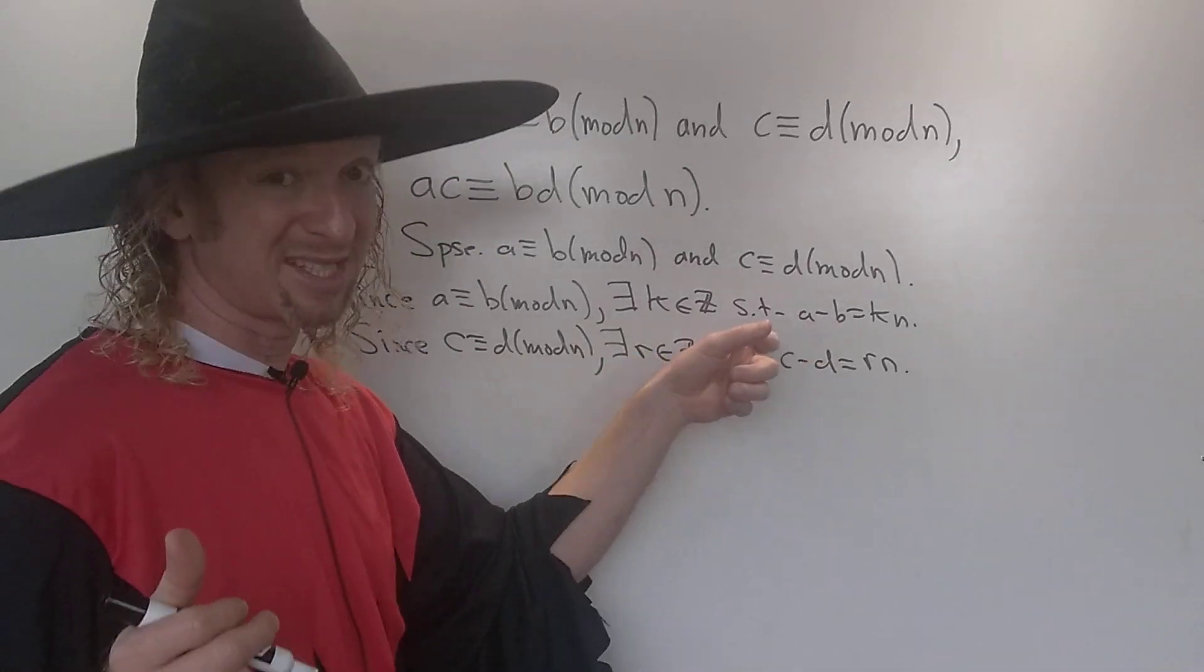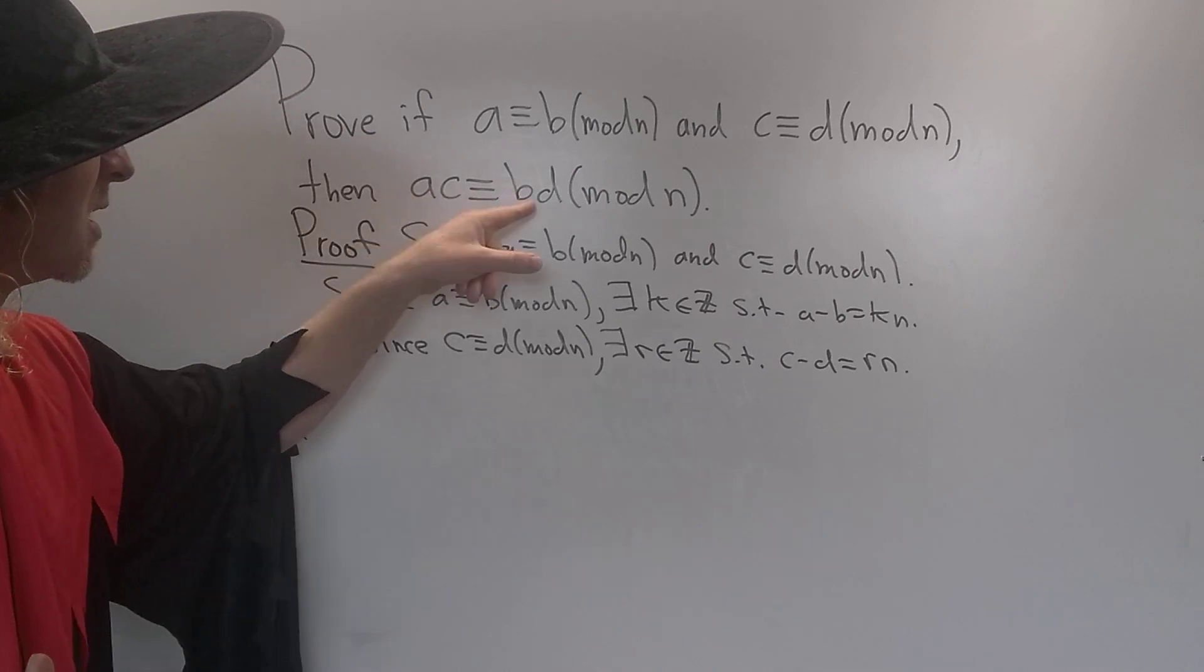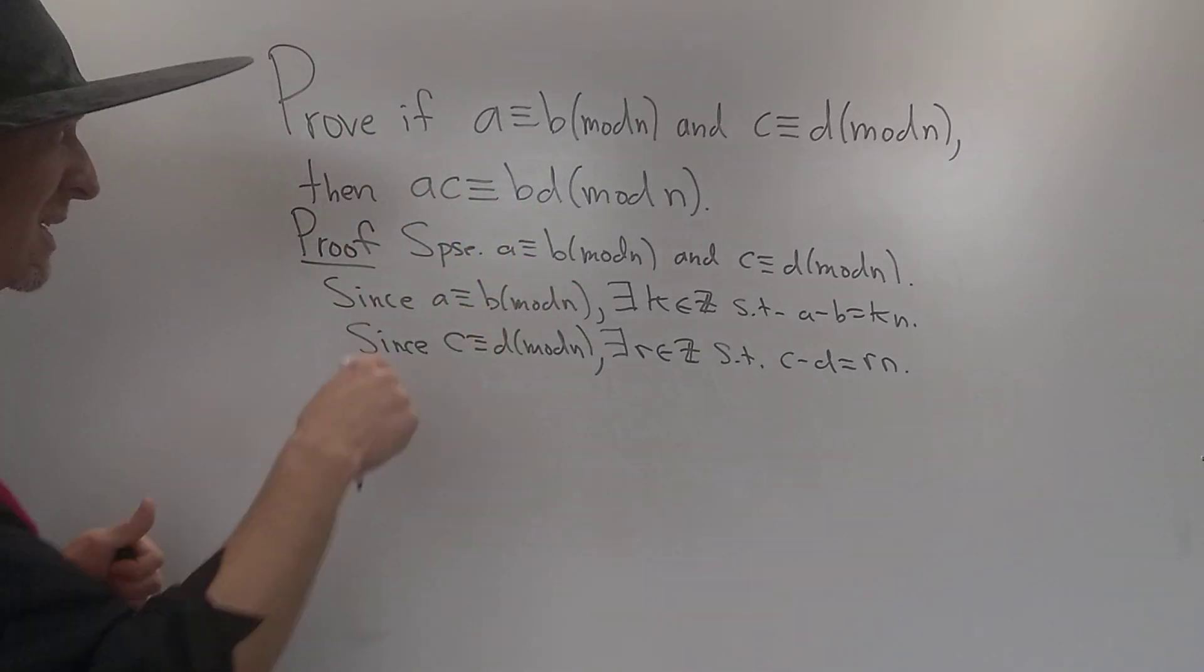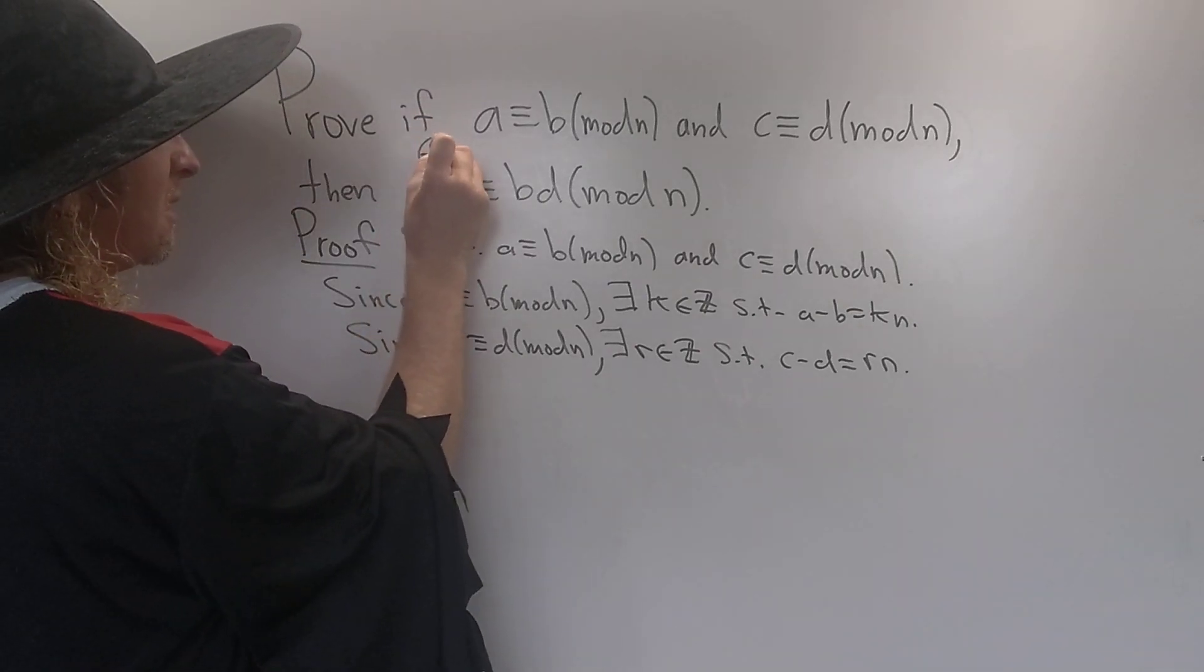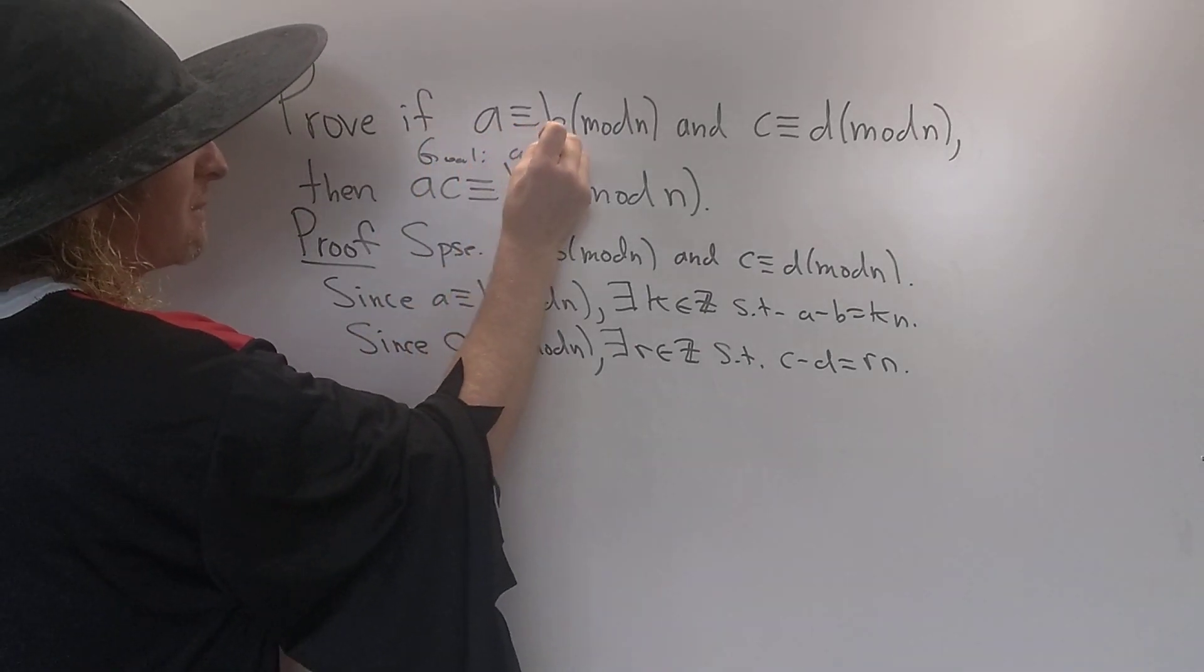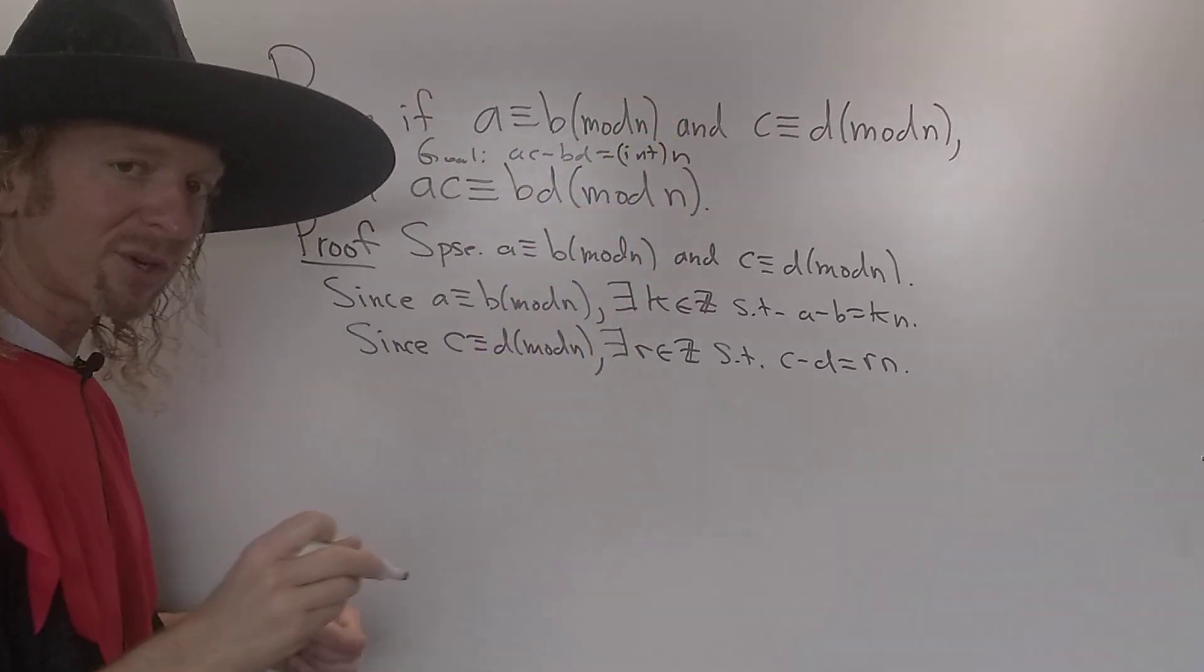So now we have to show that AC minus BD is a multiple of N, right? That's what AC congruent to BD modulo N means, right? It means that AC minus BD is a multiple of N. So an integer times N. Let's go ahead and do it.